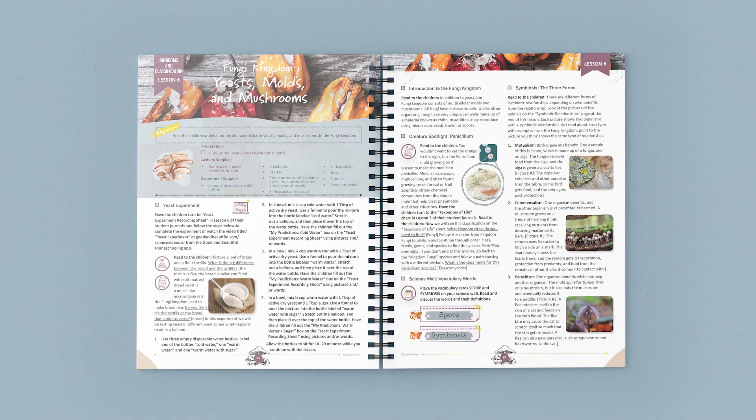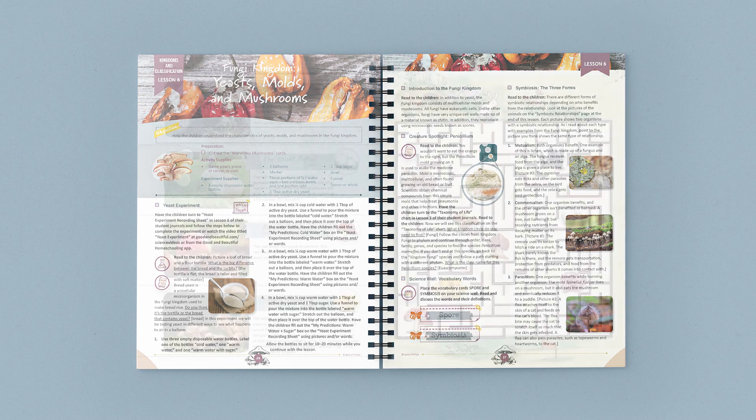In this lesson, you start by preparing a simple experiment using yeast. While this experiment sits for 10 to 20 minutes, you continue with the lesson. First, you complete a creature spotlight, learn two new vocabulary terms, and then discuss the three forms of symbiosis, matching each form to its picture.